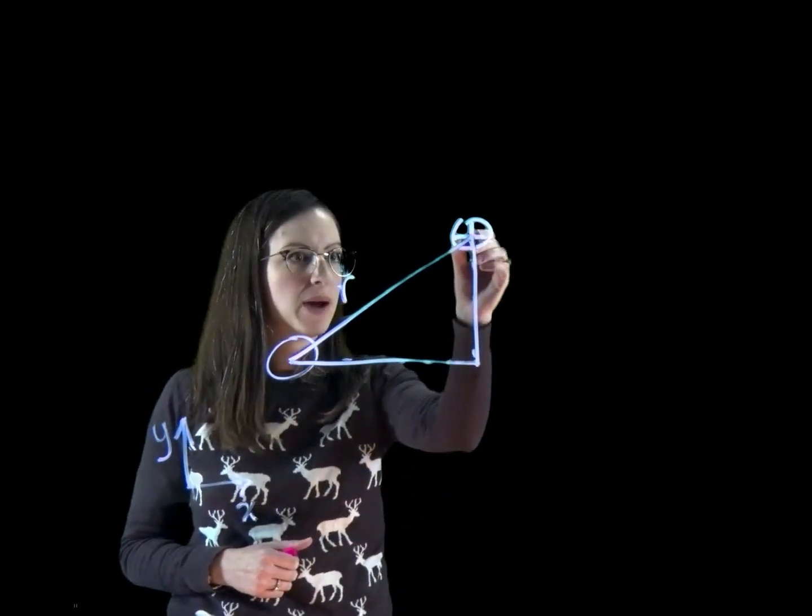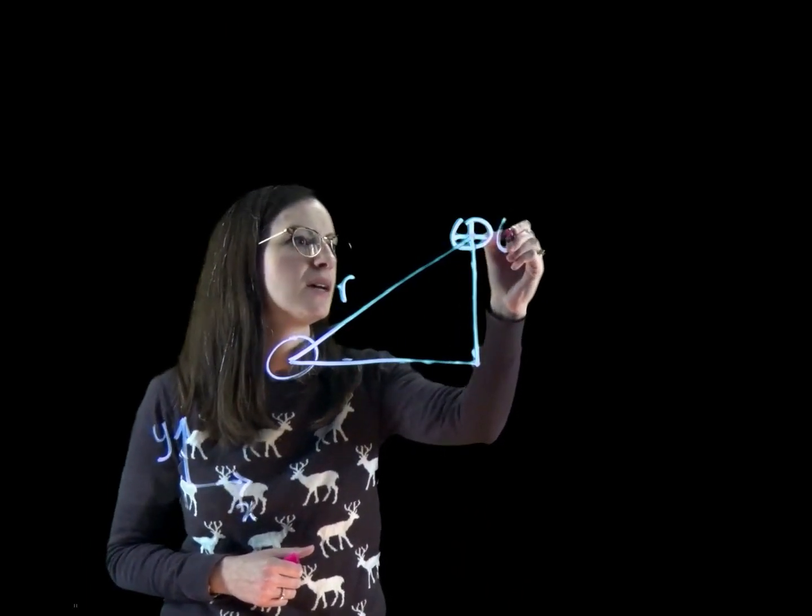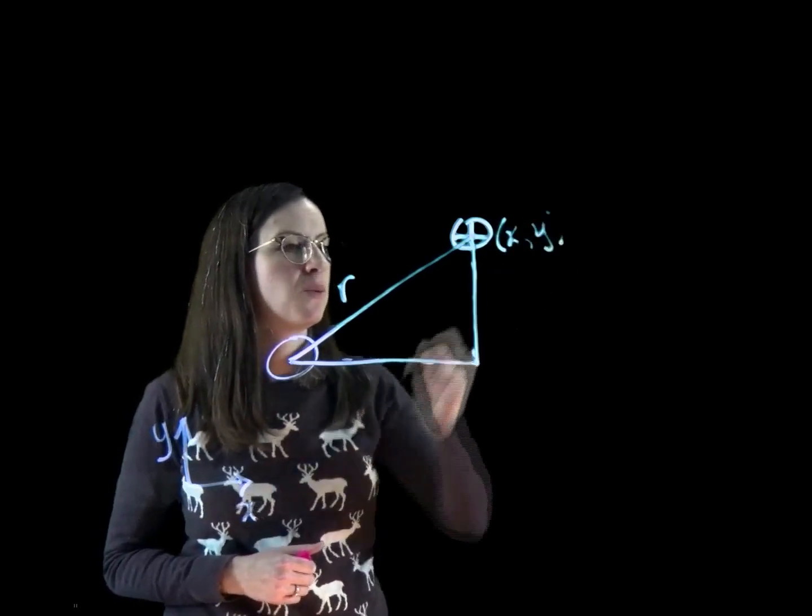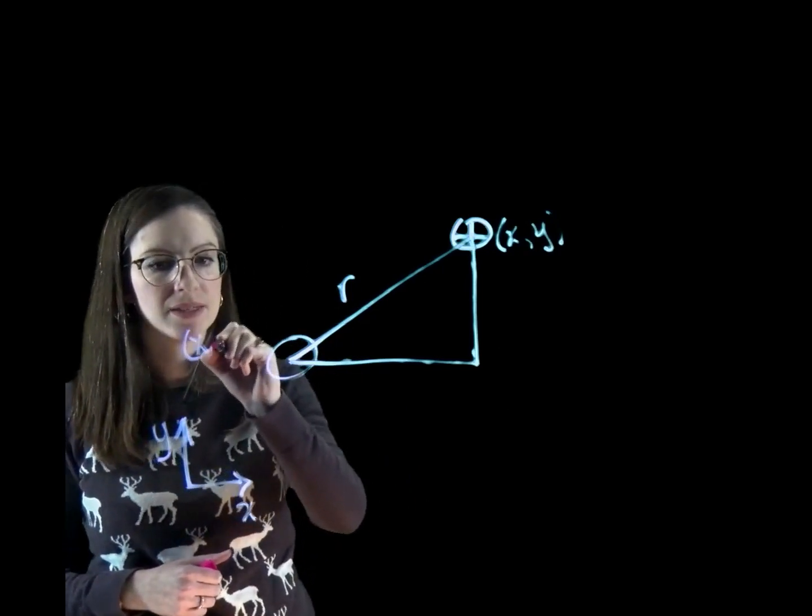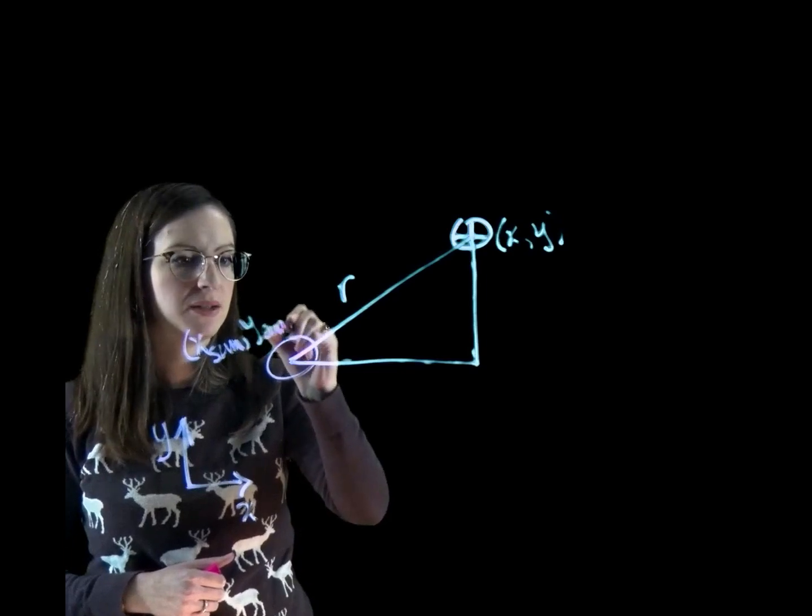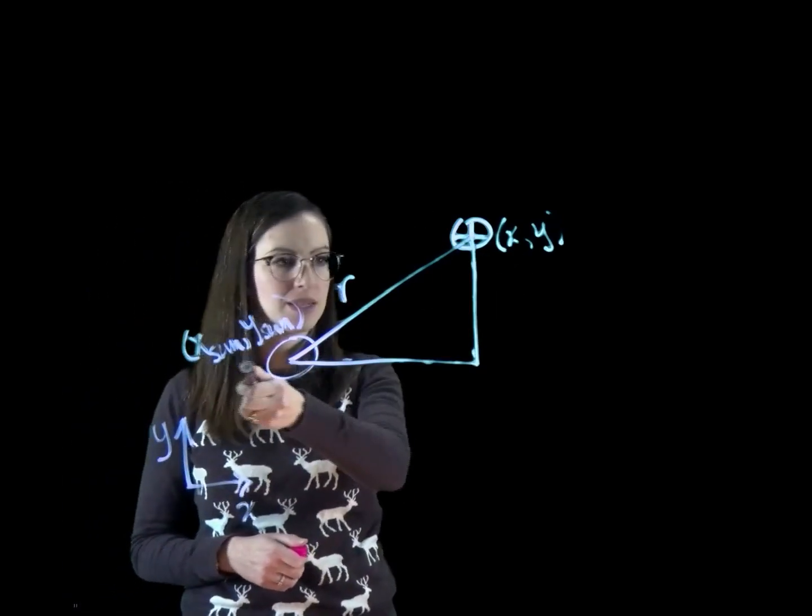So my position of my planet here, this is at x and y. And the position of my sun here is at x sun and y sun. Remember, we put this into our code as x, y and x sun, y sun.